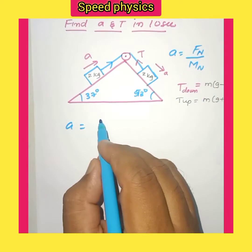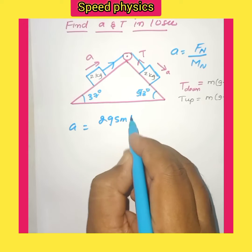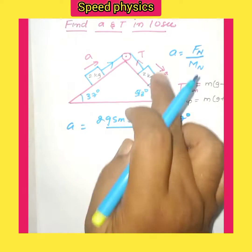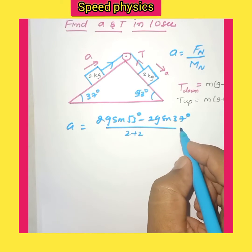So this is positive and this is negative. The equation becomes 2g sin 53° minus 2g sin 37° divided by the net mass, which is 2 plus 2. Let's solve this.